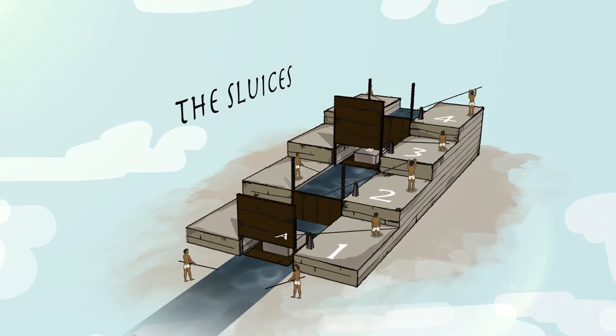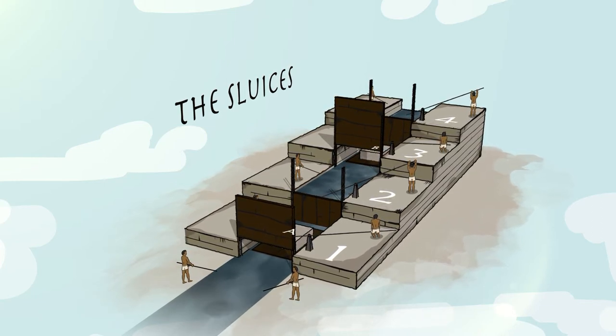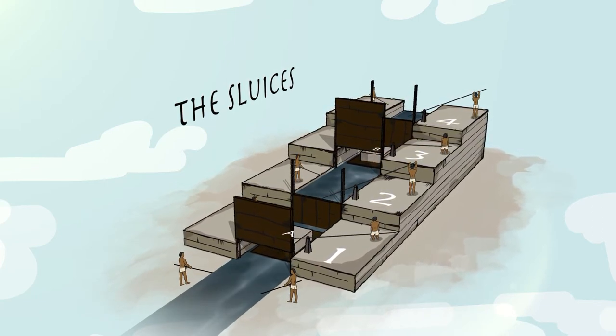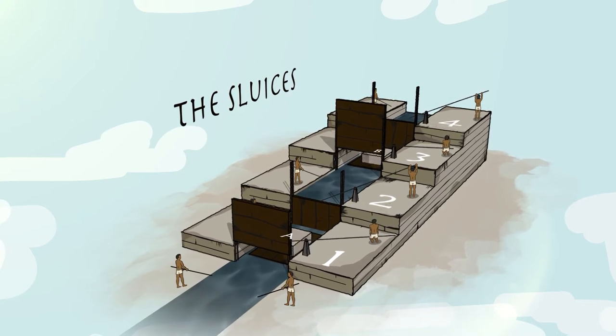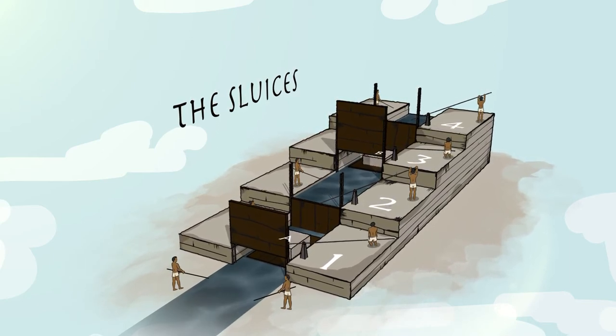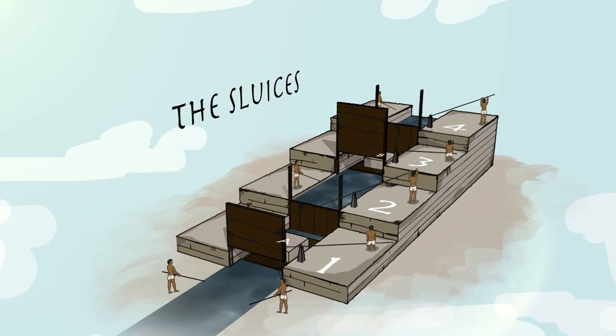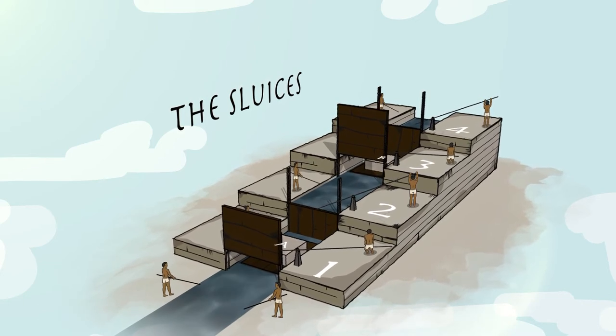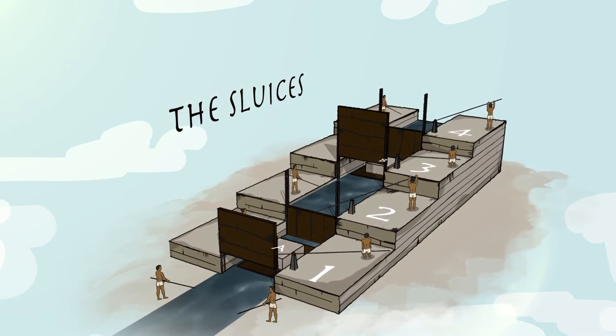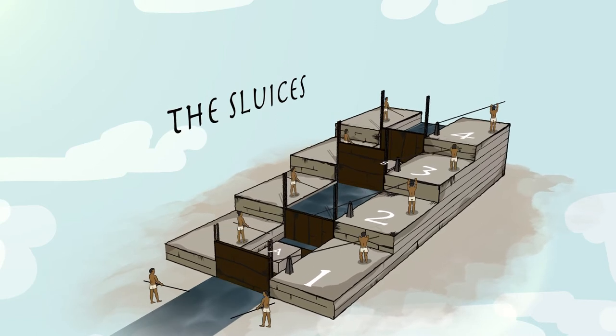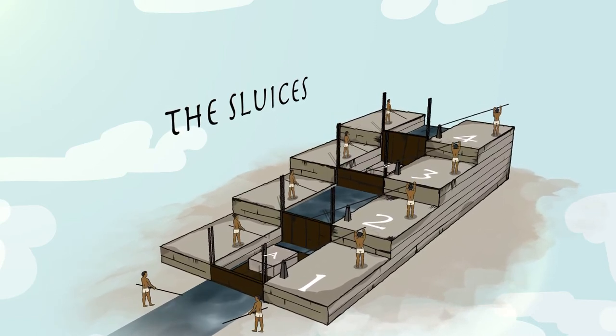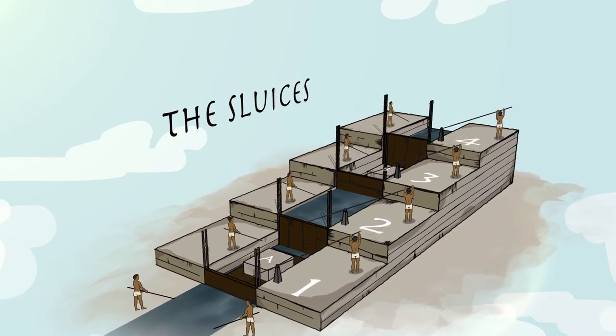Two workers on either side of the canal would push Stone A from the canal into sluice 1. The gates of sluice 1 and 3 would be open or raised. The water level in sluice 1 and the canal would be the same. As Stone A is pushed into sluice 1, Stone B is pushed into sluice 3. The gates in sluice 1 and 3 would then lower or close.